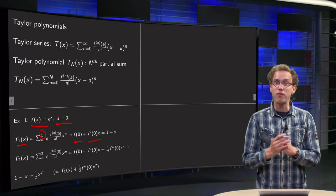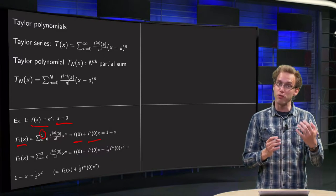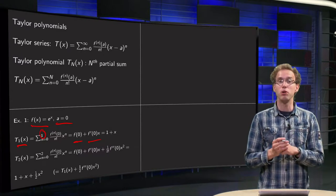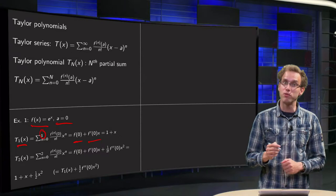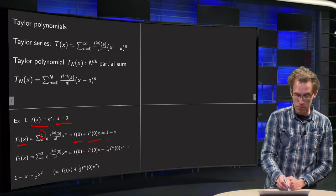So we get the n equals zero term f(0) plus the n equals one term f'(0) times x. Well, f(x) equals e to the power x, f(0) equals one, f' also e to the power x, so f'(0) also one, so we get one plus x.